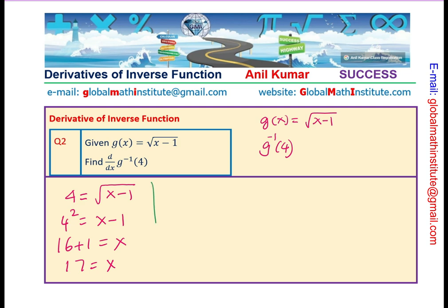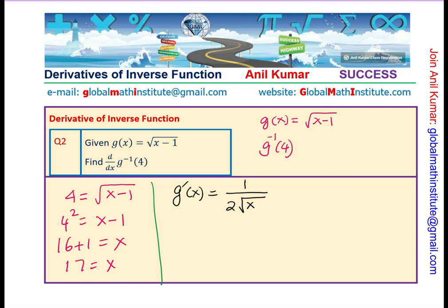From the rule which we just solved, let us find the derivative of this particular function. So, square root of x minus 1 will be 1 over 2 square root of x minus 1.